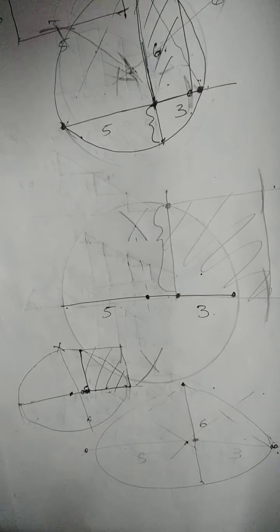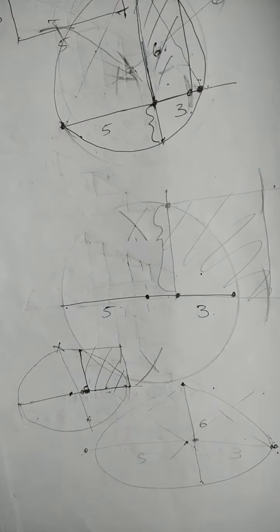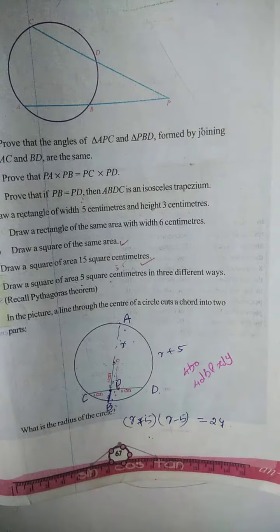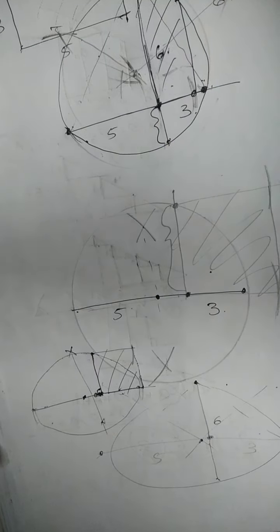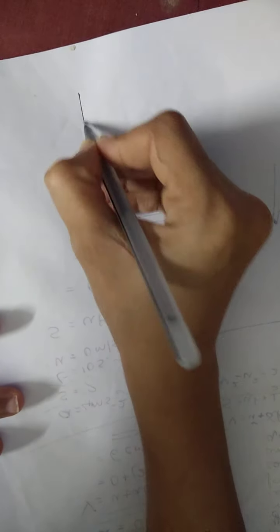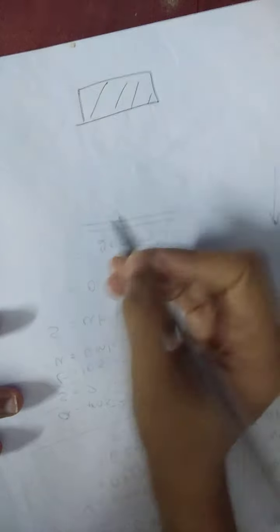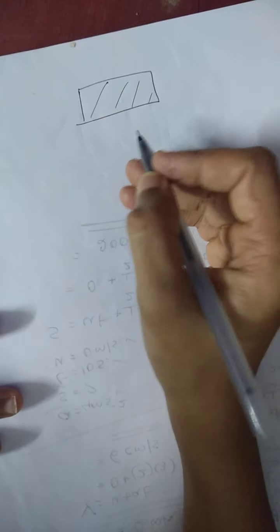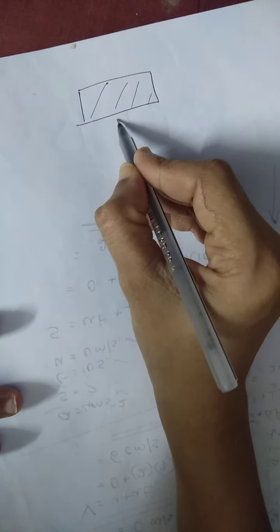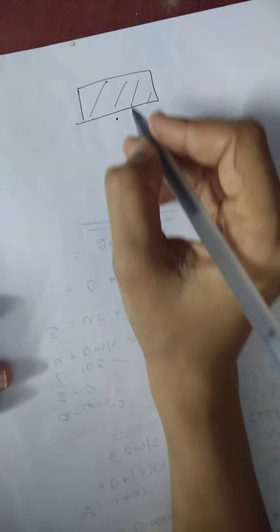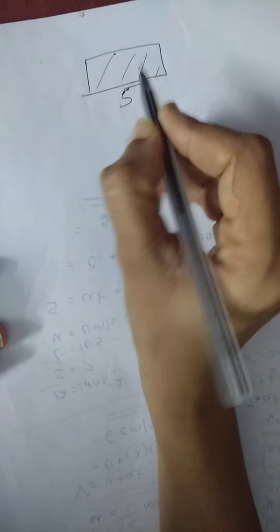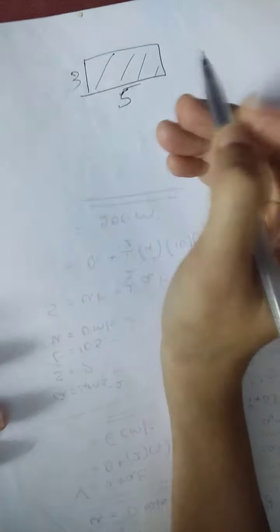This is the second question: draw a square of area 15 square centimetres. What do I say about 15 square? We can put a rectangle and draw a square in a square. We say we are talking about 15 square. What do we find in the rectangle? 5 × 3 is 15.